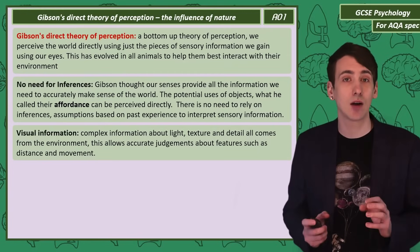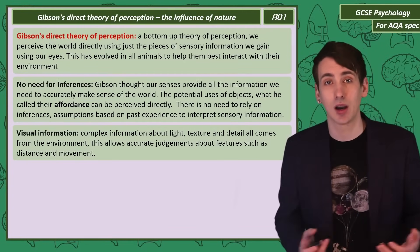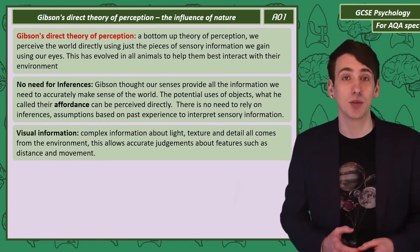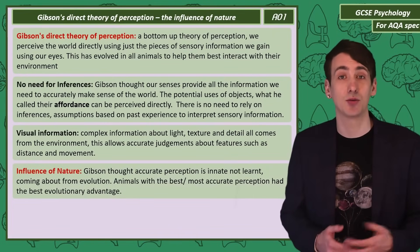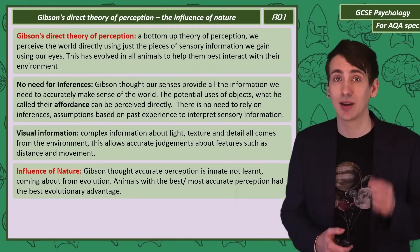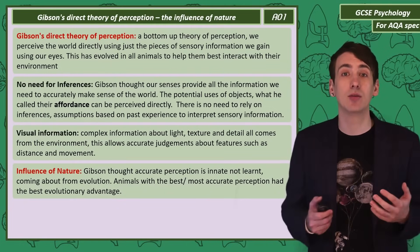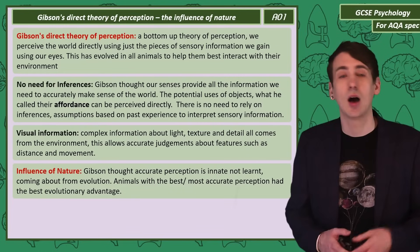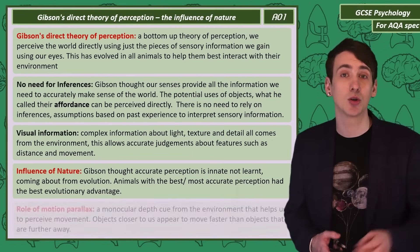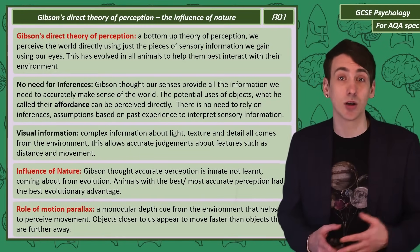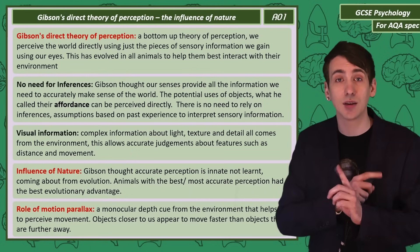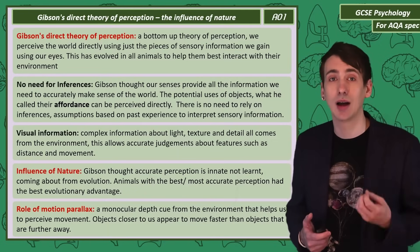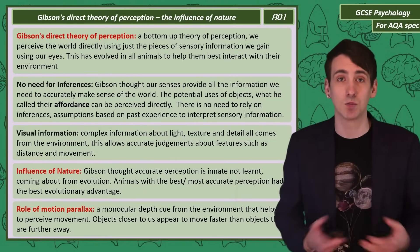This information allows an accurate and direct perception of the world, including features of objects like distance. Gibson's theory focuses on nature and its role in perception, suggesting that we have everything we need for accurate perception from birth — accurate perception is innate. He argued from an evolutionary perspective that animals would evolve to have the most accurate perception to help them survive. One monocular depth cue Gibson pointed to from the environment is motion parallax: things closest to us appear to move faster than things in the distance, as you've likely noticed when in a car or train. Gibson used motion parallax as an example of how much information our eyes can give us directly about features such as motion and depth.